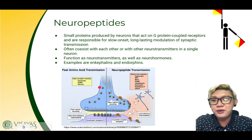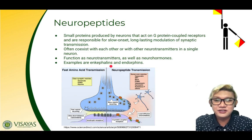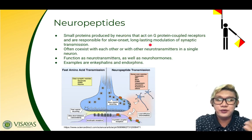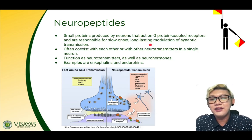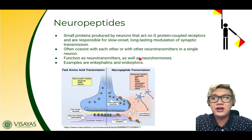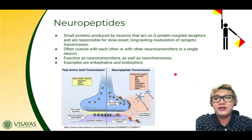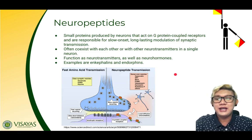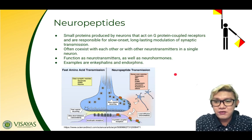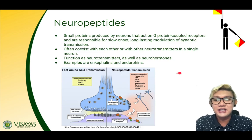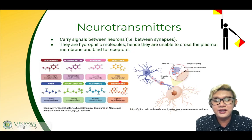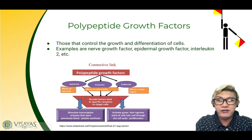Neuropeptides are small proteins that are produced by neurons and act on G-protein-coupled receptors — we will understand what those are later on. They are responsible for the slow-onset, long-lasting modulation of synaptic transmission. They often coexist with other neurotransmitters in a single neuron. They can function as a neurotransmitter and also as neurohormones. Examples are the enkephalins and the endorphins. Endorphins are also included as neurotransmitters because they have almost the same functions.